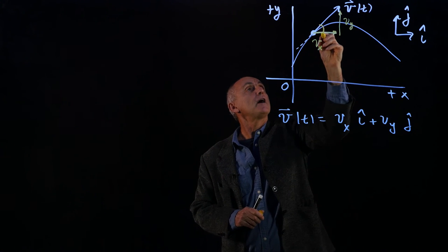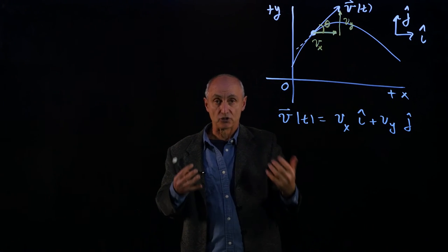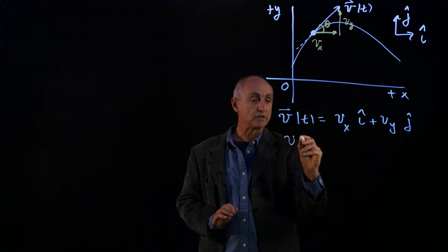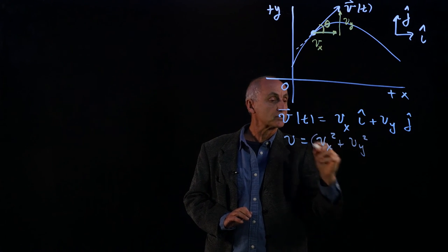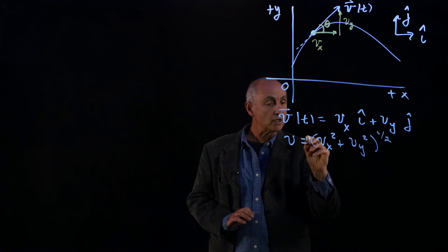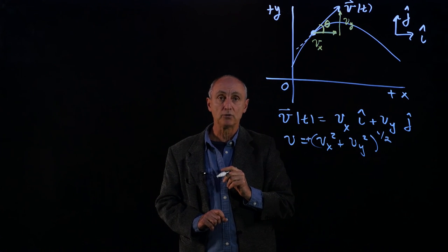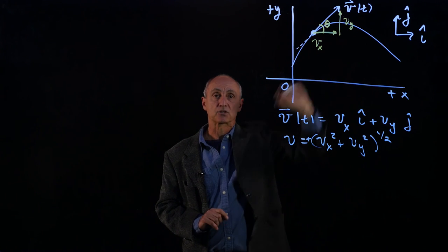And now if I define this angle theta, we know that a vector has a direction and a magnitude. We've seen that we call the magnitude the speed. So that's just the square root of the sum of these components squared. Speed is always positive, so we always take the positive square root.